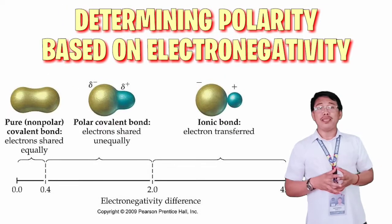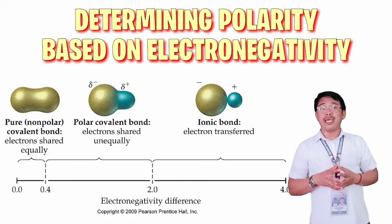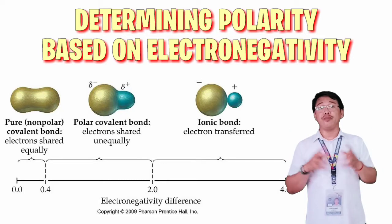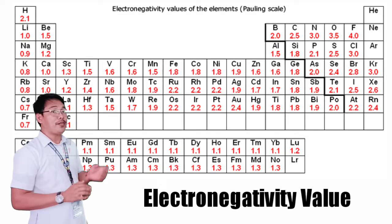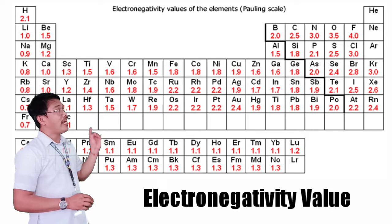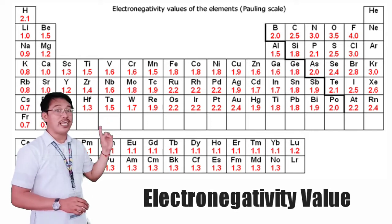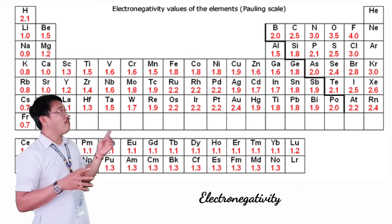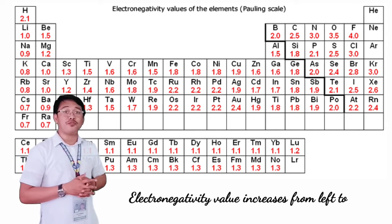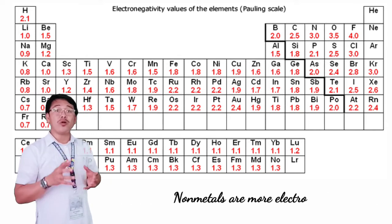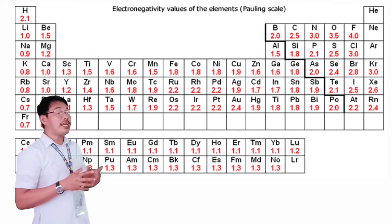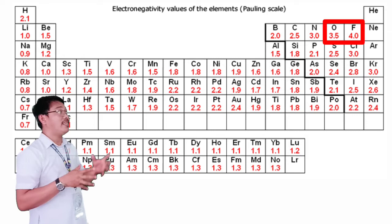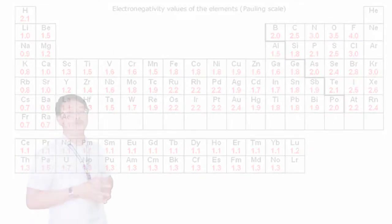We can also determine the polarity of molecules based on the electronegativity difference between the atoms present in a molecule. To get the electronegativity value of each element, we will use a periodic table. There you can see the electronegativity value of each element. Electronegativity value increases from left to right, which means that non-metals are more electronegative than metals. In the table, you can see that oxygen and fluorine have the highest electronegativity value.